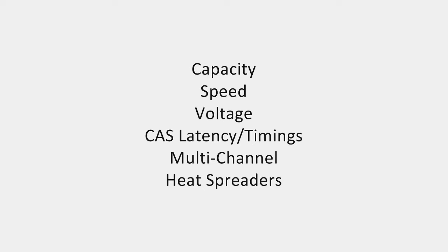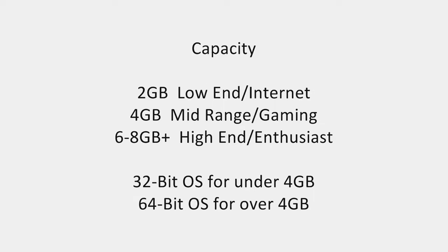When selecting desktop memory for your computer, there are a few criteria you should look at to select the correct kit for your application. First off is the capacity of the memory, the speed of the memory, the voltage that the memory operates at, the CAS latency and timings of the memory, whether you need a multi-channel kit or a single stick, and should you buy memory with heat spreaders.